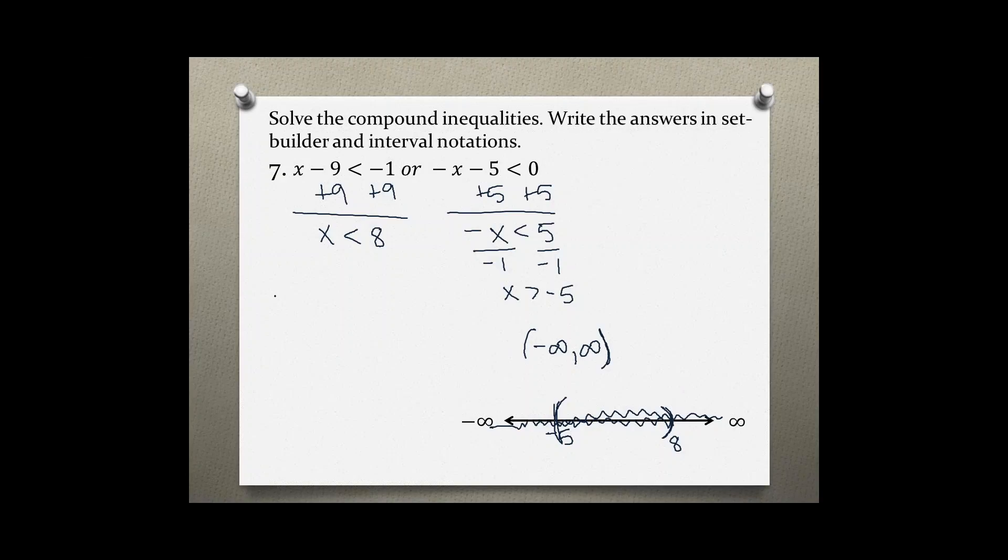And then in set builder notation, all values of x such that x is greater than negative five or x is less than eight.